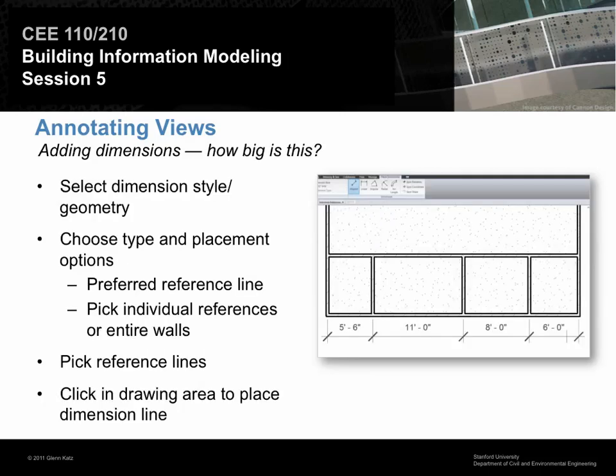So let's talk about dimensions first. The big idea with dimensions is we're going to basically choose different points in the geometry and string dimensions between them, and really use the dimensions to answer the question of how big is this. So it's always pick the reference lines, then click somewhere in the drawing area to actually place the dimension line. Let's go ahead and try that.